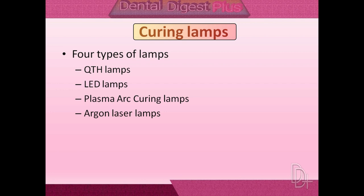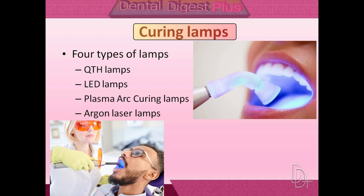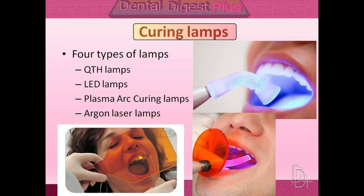Regarding precautions when using curing lamps: the light emitted by curing units can cause retinal damage if a person looks directly at the beam for an extended period of time, or even for short periods in the case of lasers. To avoid such damage, never look directly into the light tip, and minimize observation of reflected light for longer periods. Protective eyeglasses and various types of shields that filter the light are available for increased protection for both clinical personnel and patients.